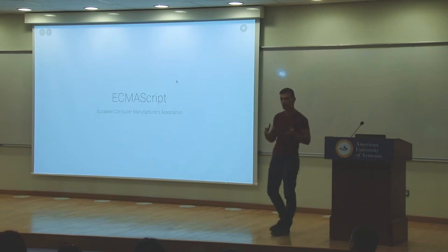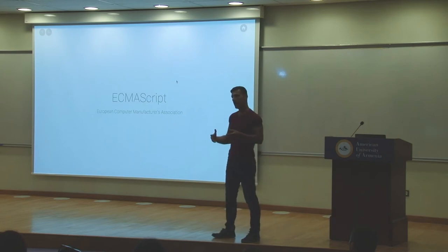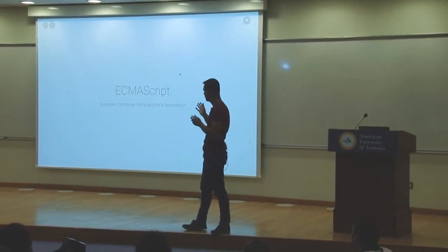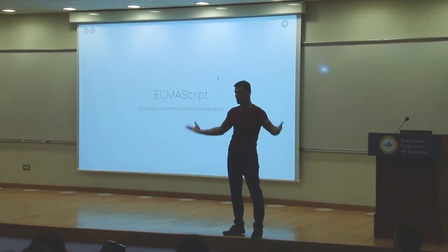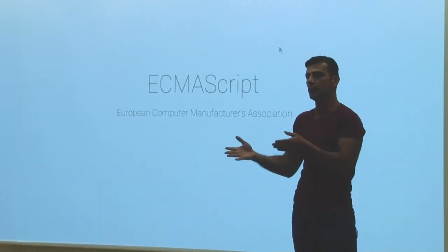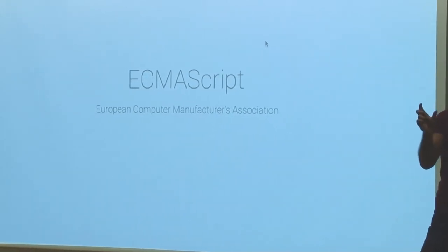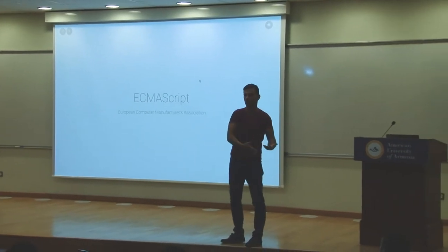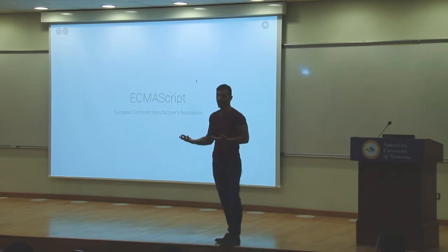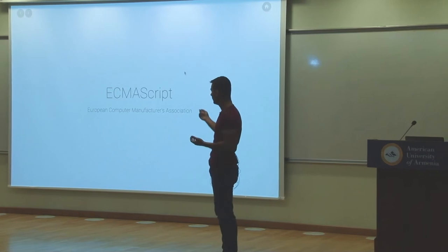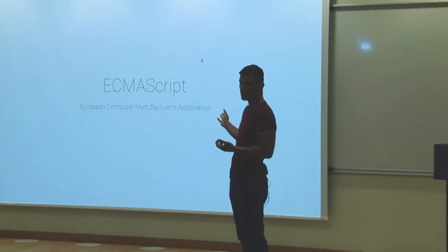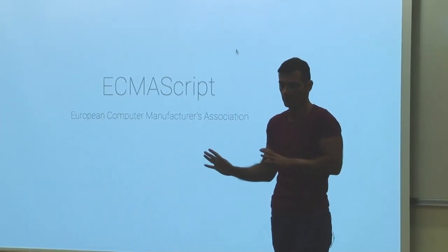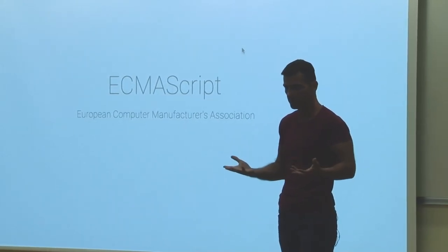JavaScript was originally created by Netscape where Brendan Eich was working. At some point they decided to make it a standard and went to the European Computers Manufacturer Association (ECMA), a standards body in Europe. The problem was the name 'JavaScript' contained 'Java', which was copyrighted by Sun Microsystems. So they called the standard ECMAScript. ECMAScript is basically JavaScript — the standard version of it. If you ever hear ECMAScript, it's JavaScript — the same thing.